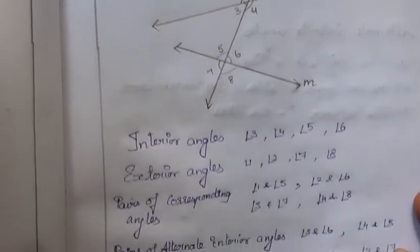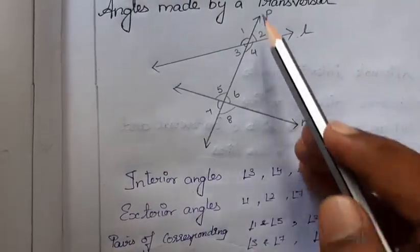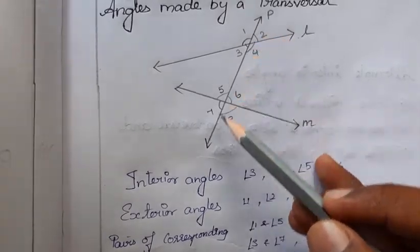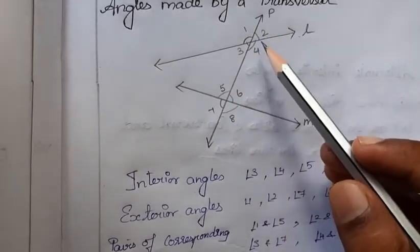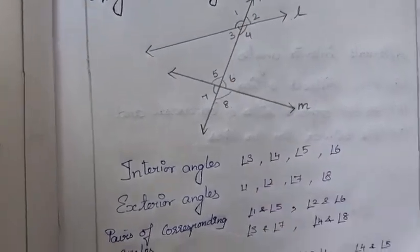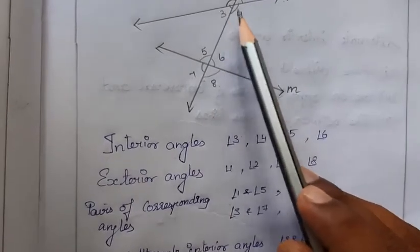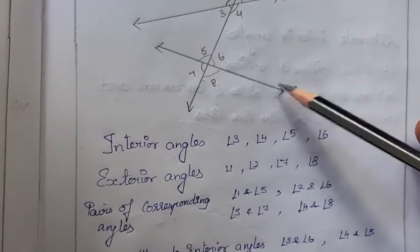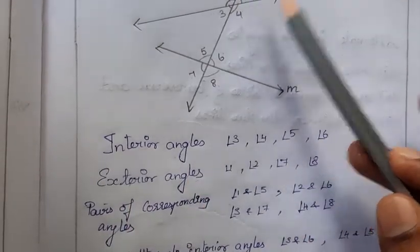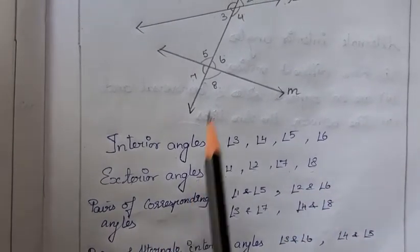Now let's look at angles made by a transversal. Considering two lines L and M, both intersected by line P, so line P is the transversal. This transversal makes eight angles: 1, 2, 3, 4, 5, 6, 7, 8. Interior angles are 3, 4, 5, 6 — those inside lines L and M. Exterior angles are 1, 2, 7, 8 — those outside.